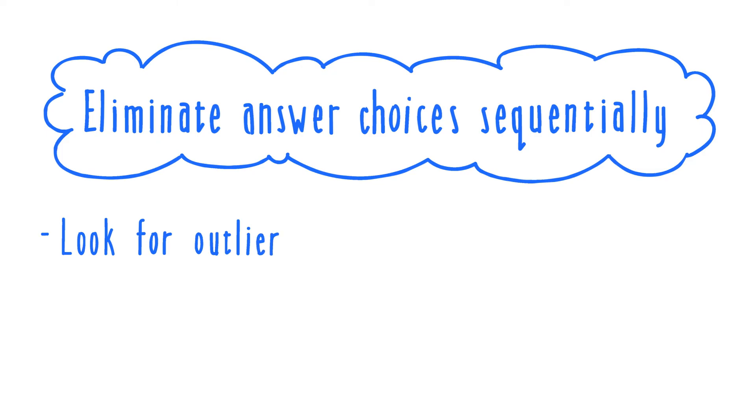That means asking yourself, does any angle stand out? Is any angle obviously larger, obviously smaller? Are any pairs of angles obviously the larger two or obviously the smaller two in the problem? And then see if this allows you to eliminate any wrong answers.